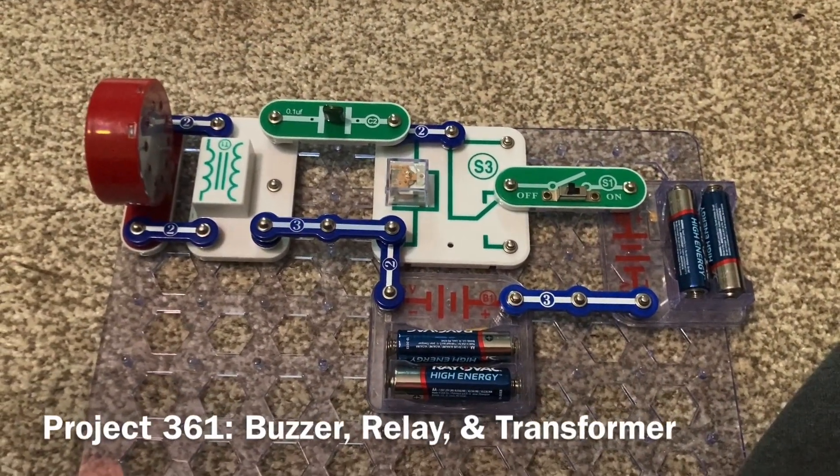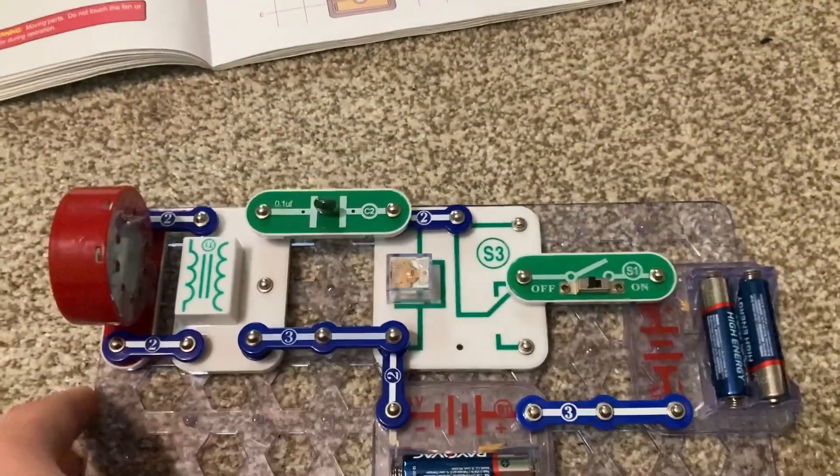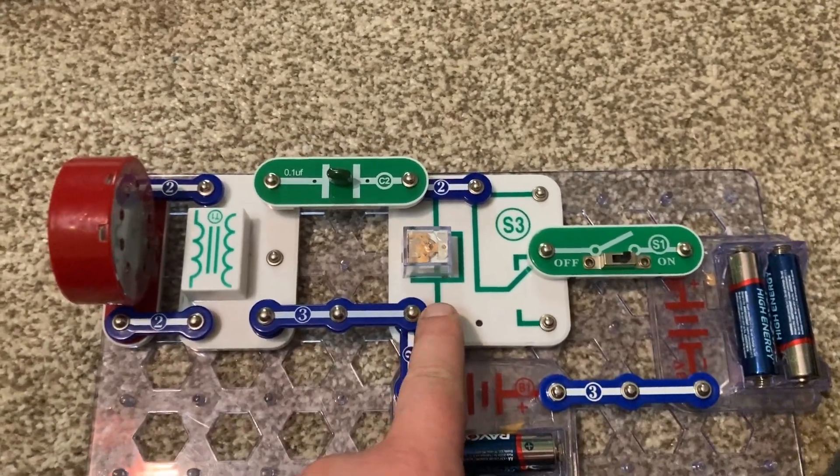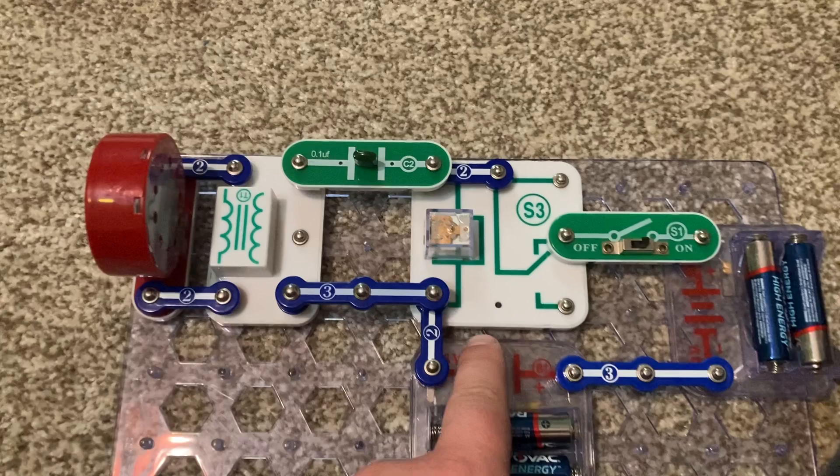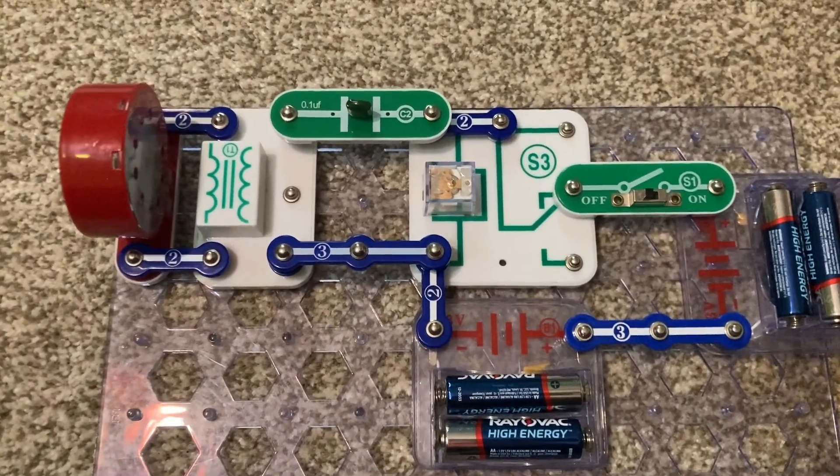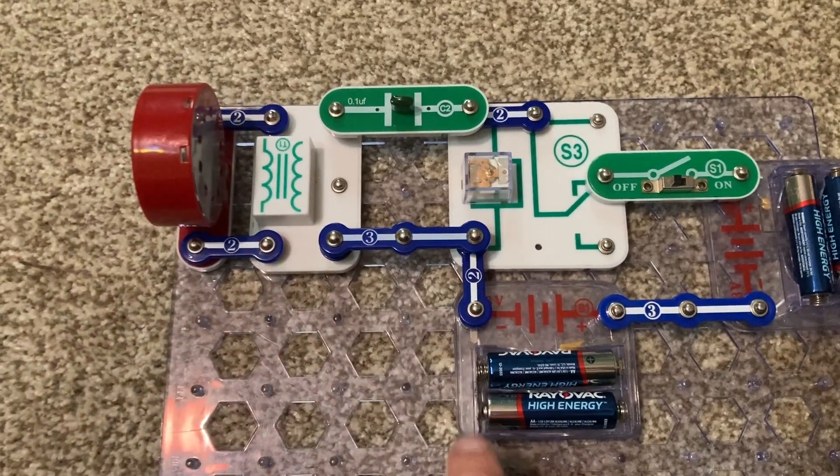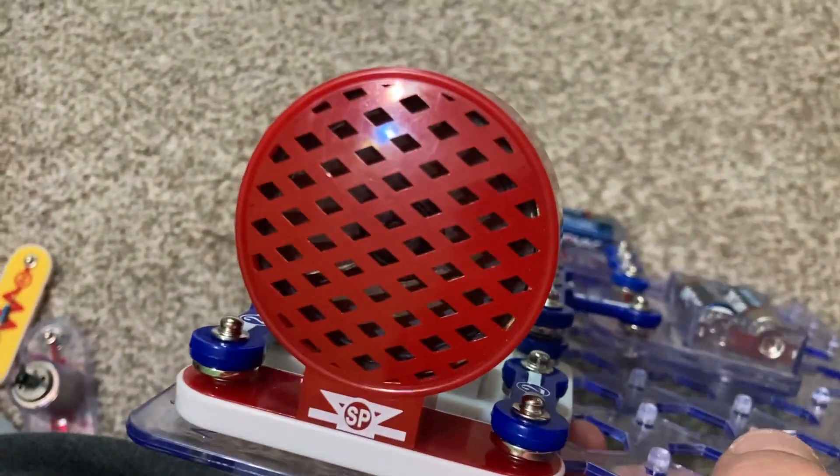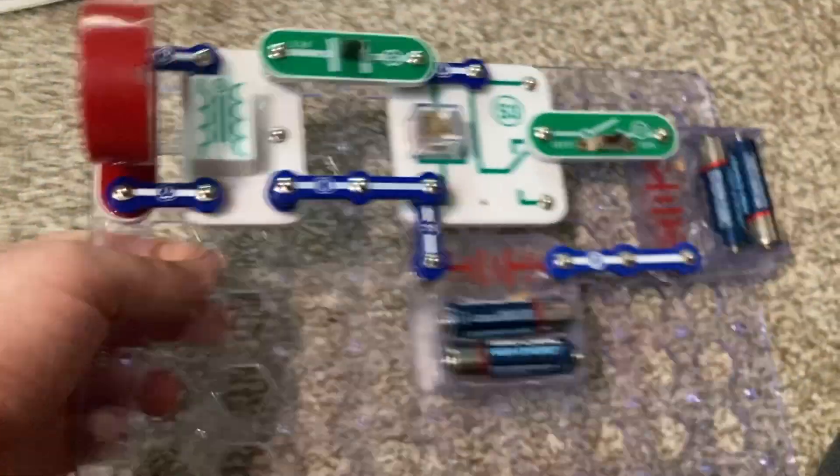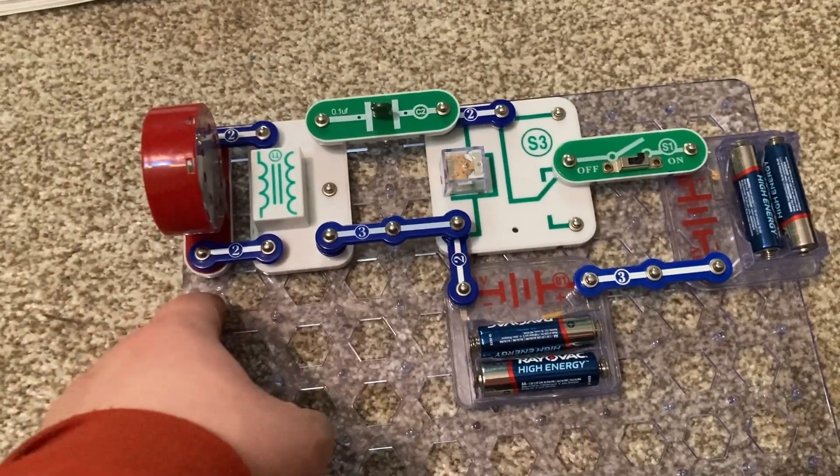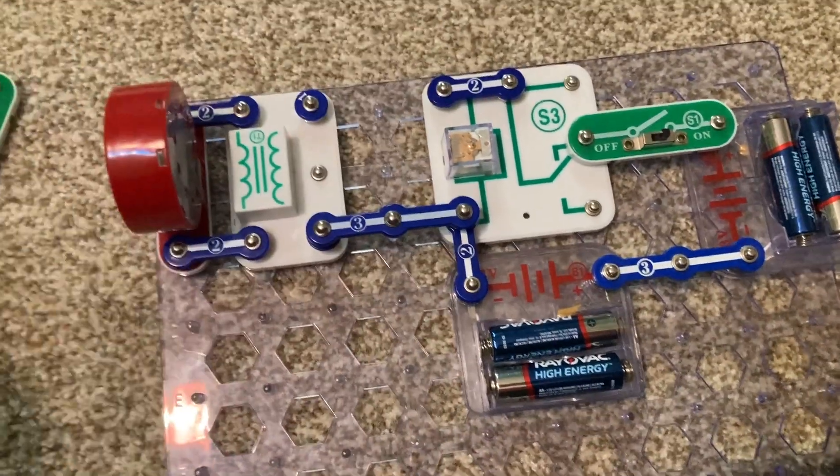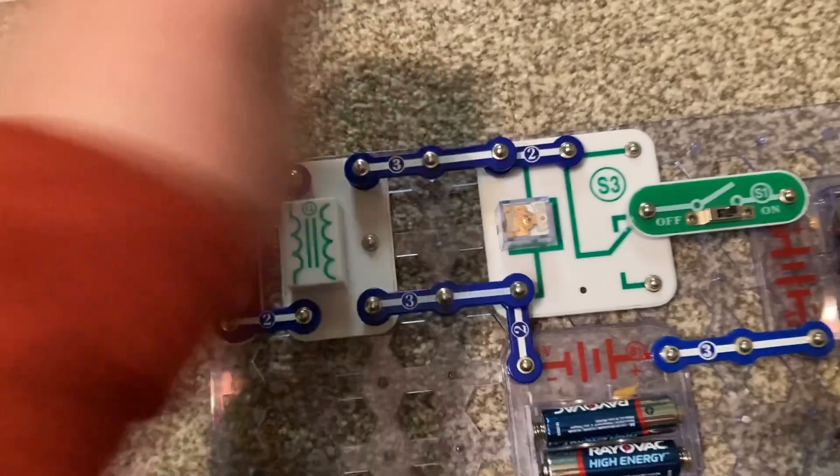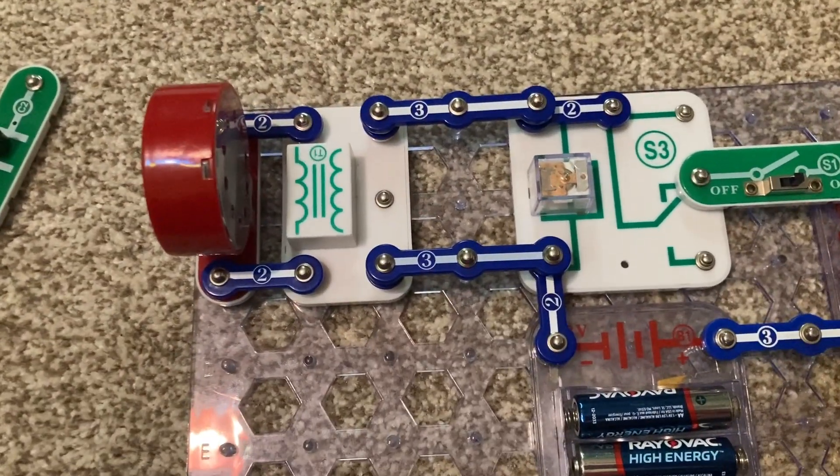This circuit enables the speaker to produce sound when the relay buzzes. The buzzing of the relay generates the opening and closing of the relay's contacts generate an AC voltage, which is in turn converted to a DC voltage by the transformer. And then sound can be heard on the speaker. But it can be hard to distinguish it from that generated by the relay itself. If you want to make the sound a little bit louder, you can just replace the C2 capacitor with a three snap wire. And you probably noticed a slight change in sound.